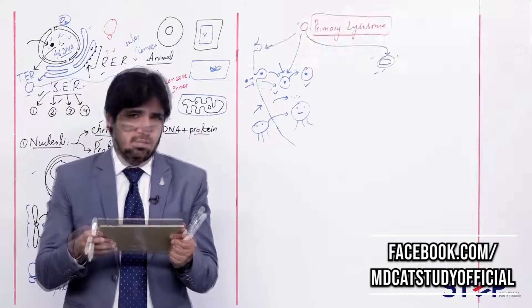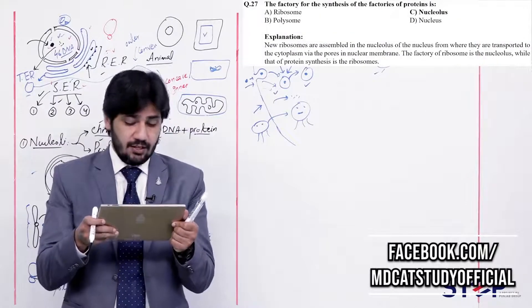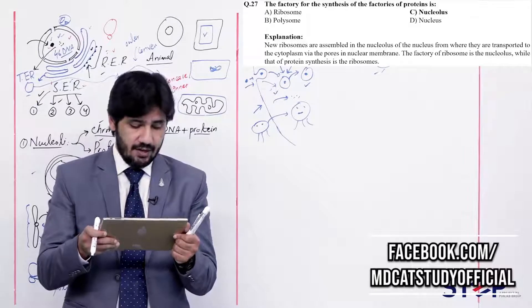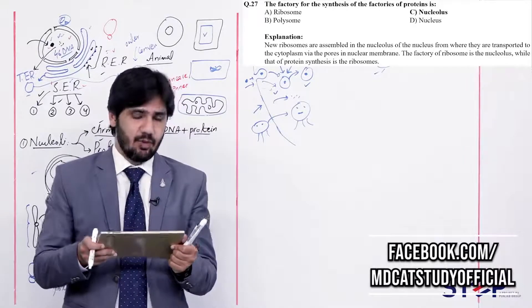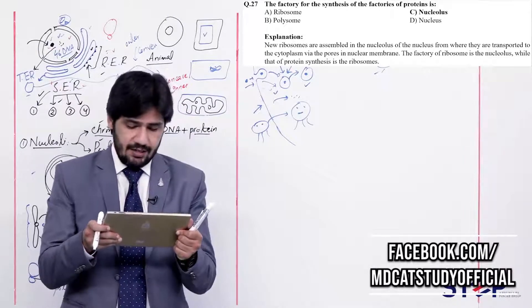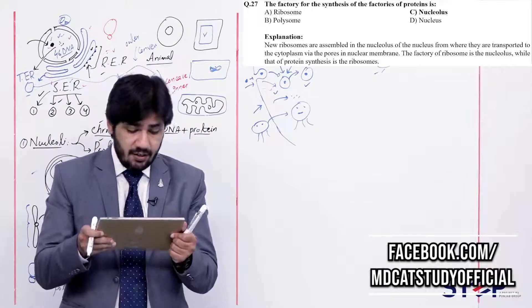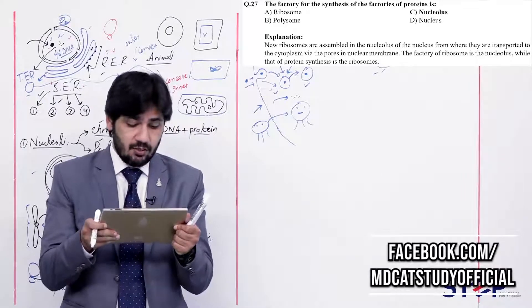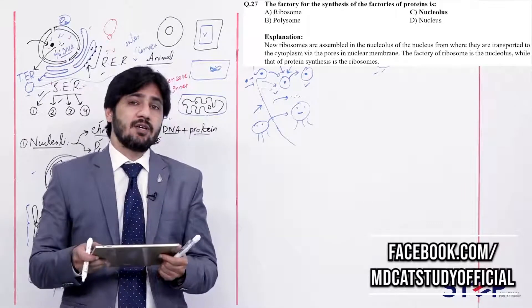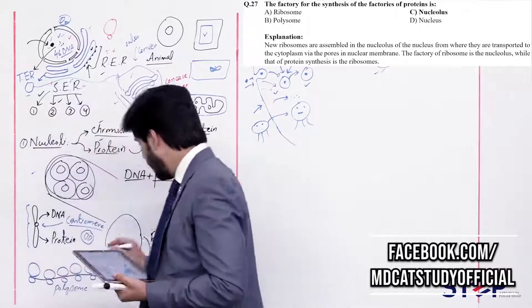Question 26: Tay-Sachs disease indicates the deficiency of a blank enzyme — (alpha) anabolic, (beta) catabolic, (charlie) metabolic, (delta) holoenzyme. In Tay-Sachs disease, lipid accumulates in the cell because it is not being catabolized — its breakdown is not occurring. This means a catabolic enzyme is deficient. Right answer is beta — catabolic enzyme. Anabolic enzymes build up molecules, which is the opposite of what is needed here.